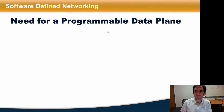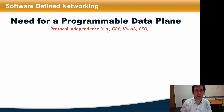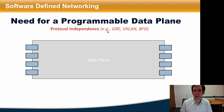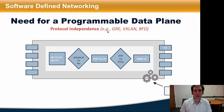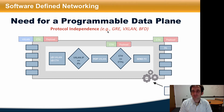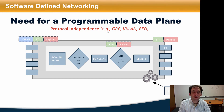Emerging data plane devices enable increasingly flexible control on how they process packets, in terms of defining custom packet header formats, altering the number of stages in a packet processing pipeline, adding state such as tables to various stages in the pipeline, and specifying new data plane functions for packet processing. The fixed nature of OpenFlow devices makes it hard to add new protocols or remove protocols if they're no longer needed.